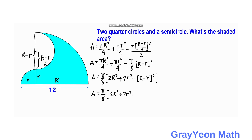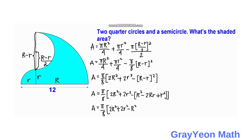We expand (R minus r) squared to get R squared minus 2Rr plus r squared. Then we distribute the negative sign, giving negative R squared plus 2Rr minus r squared.